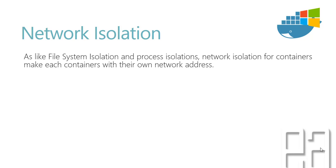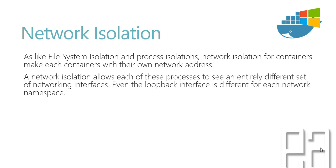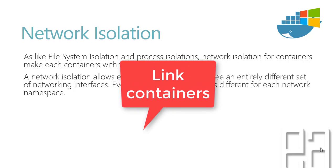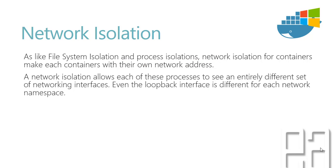Network isolation, like file system isolation and process isolation that we saw in our previous videos, makes each container have its own network addresses. Network isolation allows each of these processes to see an entirely different set of networking interfaces, and even the loopback interface is different for each network namespace. Network isolation is a very important concept when working with different containers.